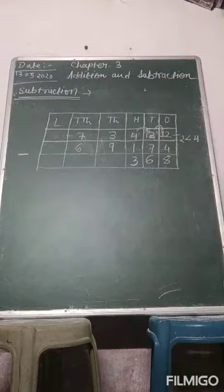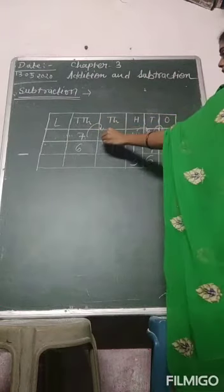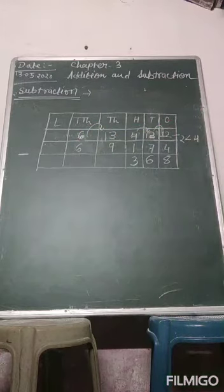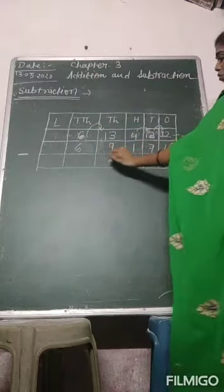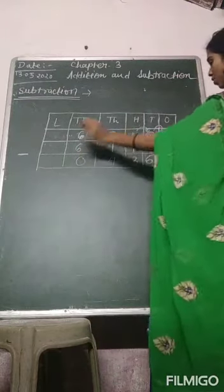Then we will borrow from the 10,000 place. 13 and 6. So 13 minus 9, 4. And then 6 minus 6, 0.